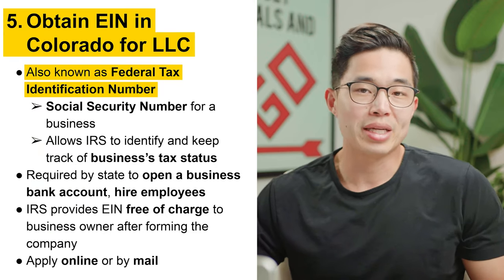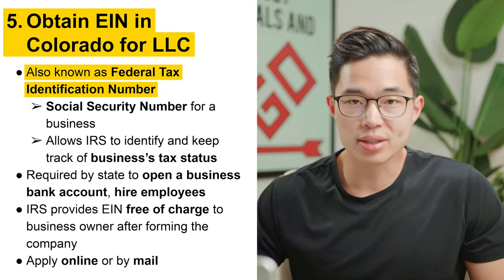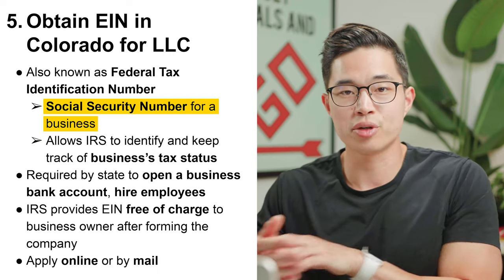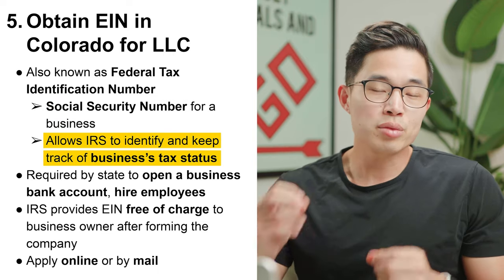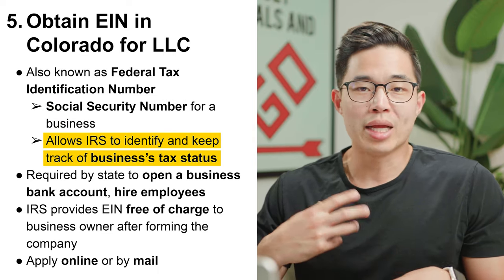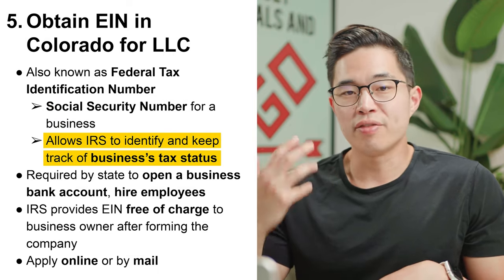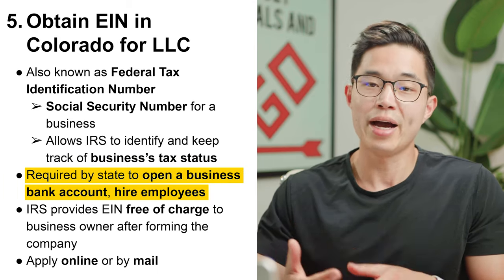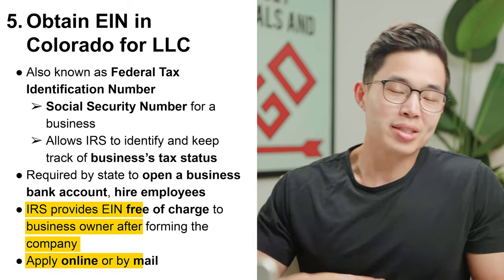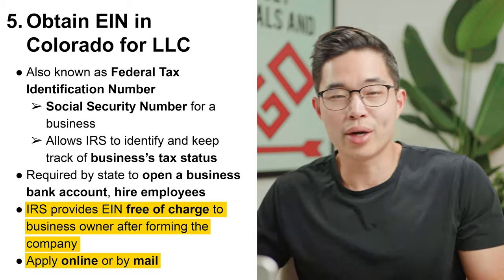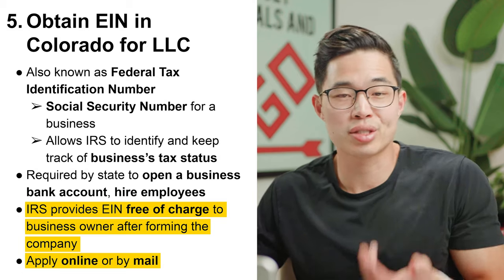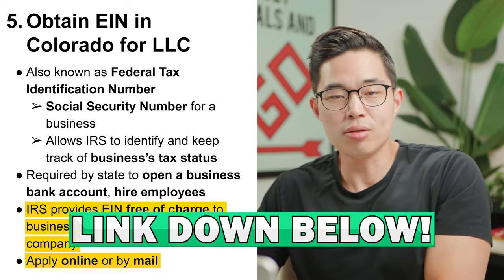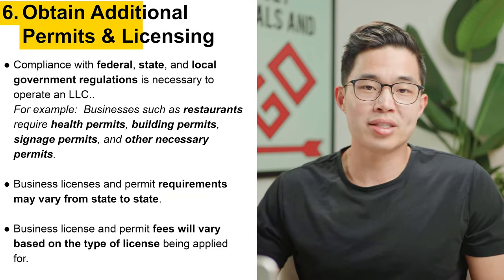Step number five is to obtain your EIN for your LLC. This is basically like your social security number for your business — you need it to file your taxes, open a business bank account, and hire employees. You can have Northwest do this for you, but I recommend just doing it yourself since it takes about five minutes. The link will be down below and it's completely free of charge.